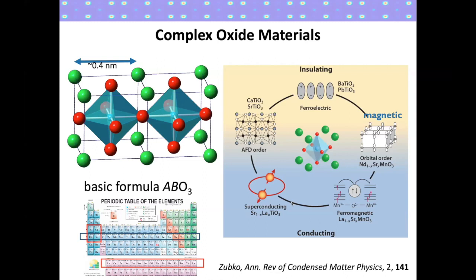At what I'm going to refer to as the A site, we can dope holes by changing the relative concentration of lanthanum and strontium, where increasing the strontium content increases the hole concentration in these compounds. There's a very special doping of about 30% where, at room temperature, this material is in the ferromagnetic metallic ground state.